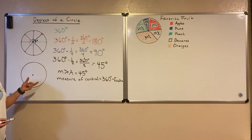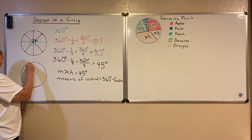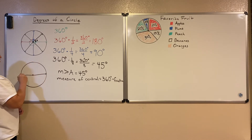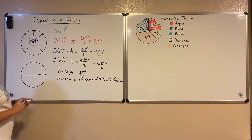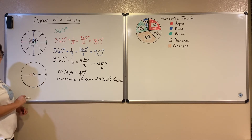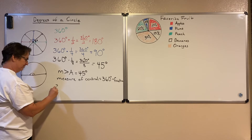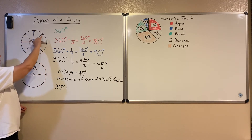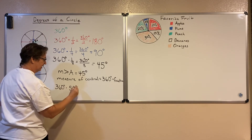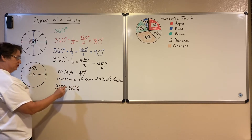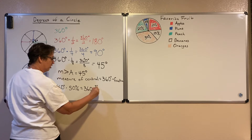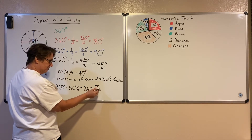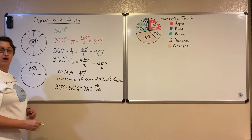What about if I had a percent instead? We know I could call this one half, but I could also call that 50%, because one half is the same as 50%. To find the measure of the angle for 50%, we do the exact same thing — we just take 360 and multiply it times 50%. Remember when we multiply by a percent, percent is just 50 over 100, because percent is always out of 100. Then when I multiply I can reduce or simplify first — if I divide both the top and the bottom by 10 I can reduce those zeros.